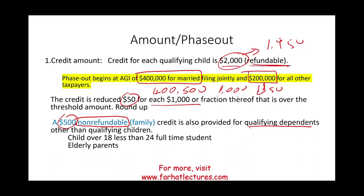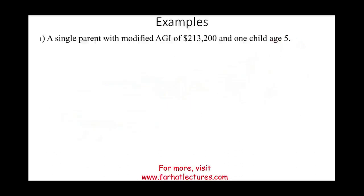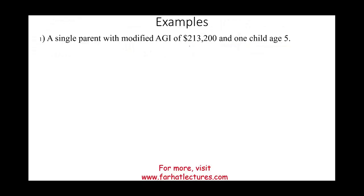Or, if you have elderly parents living with you as qualifying dependents, they will qualify you for this additional $500. That's why it's called the family/child tax credit — it was always known as the child tax credit. Let's take a look at a few examples. We have a single parent with a modified adjusted gross income of $213,200 and one child age 5. We're going to compute the child tax credit for this single parent.